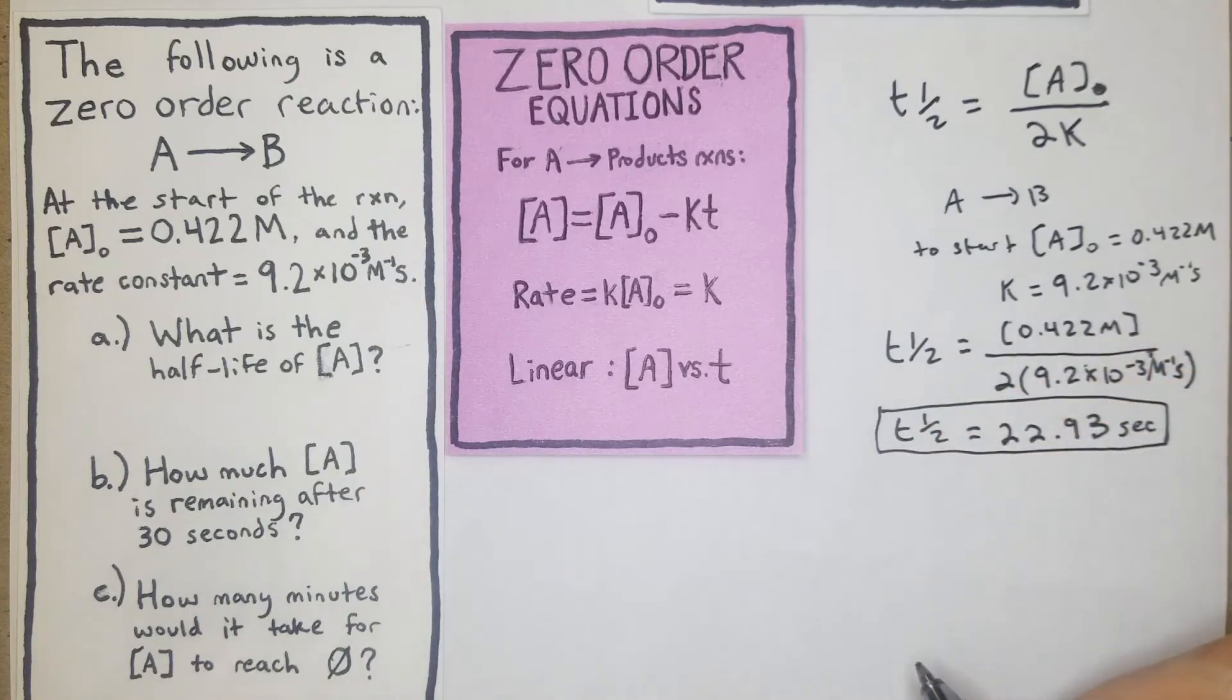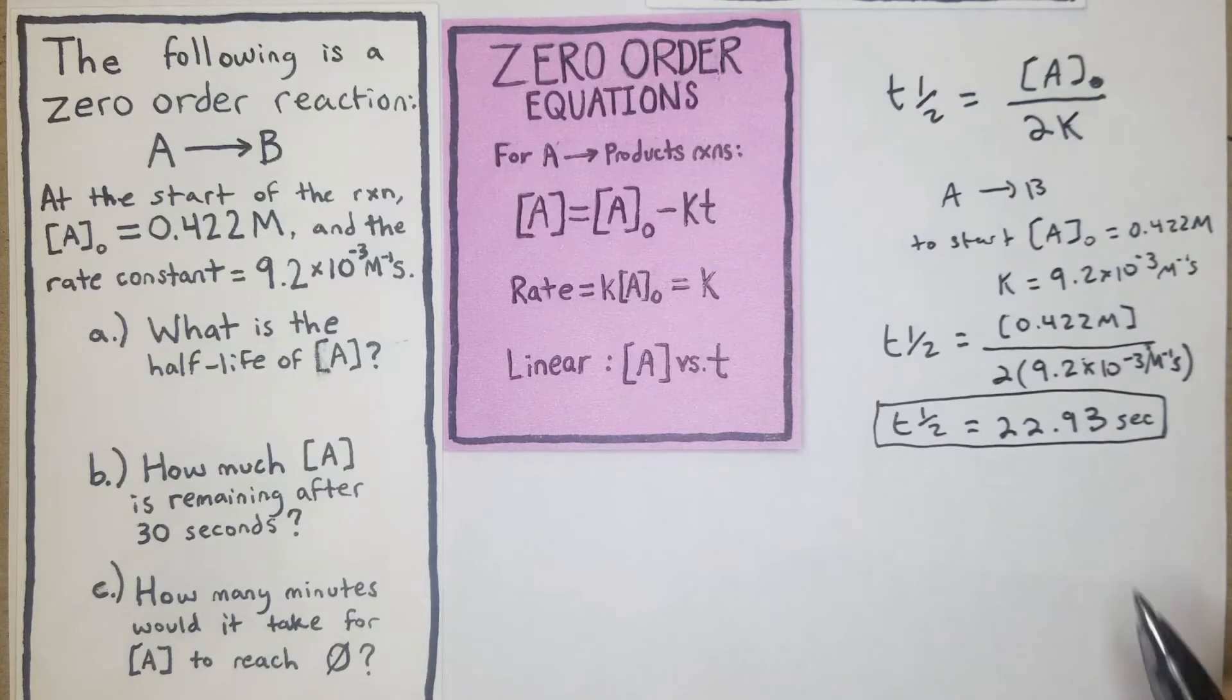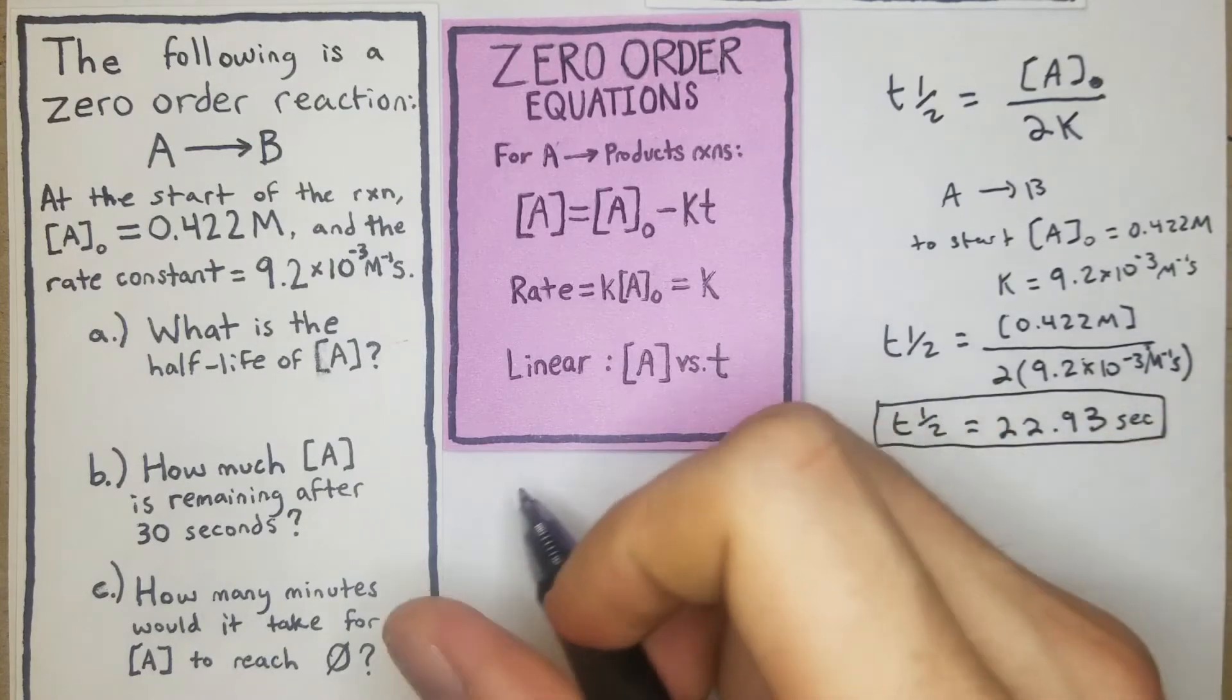So we've answered part A. Now part B: how much of A is remaining after 30 seconds? So in this case what we're going to do, we're going to start again like we always do with the rate.